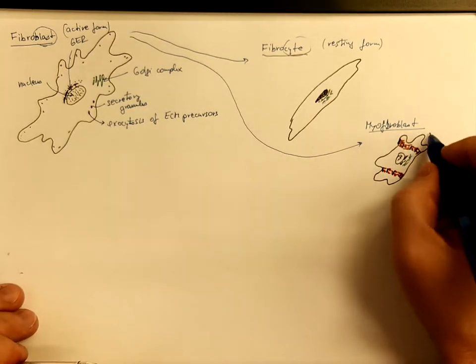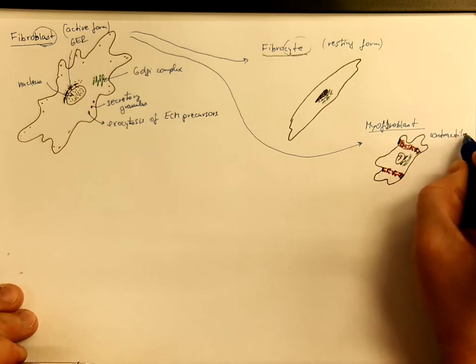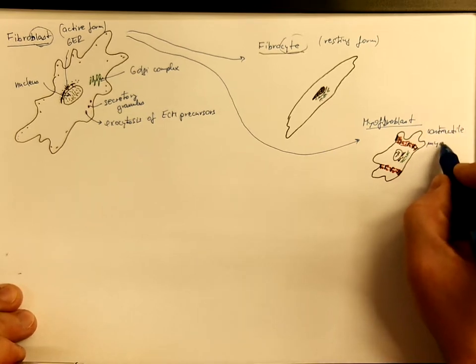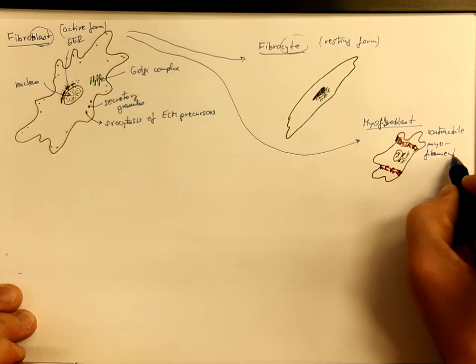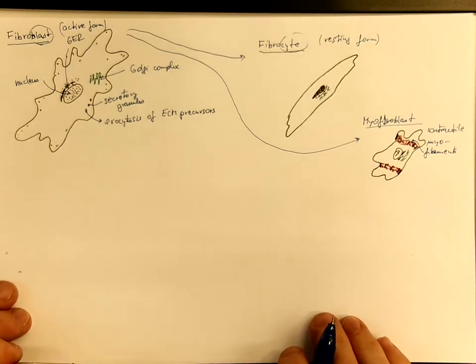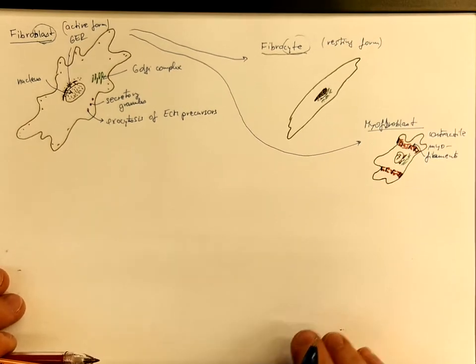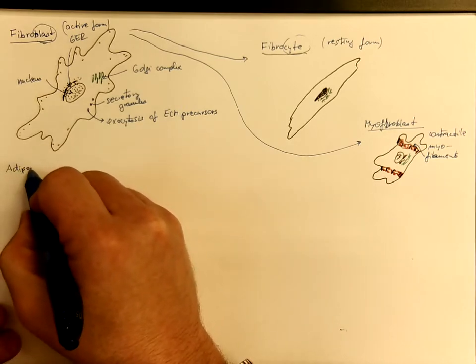Another common cell type in connective tissues is the fat cell called adipocyte.